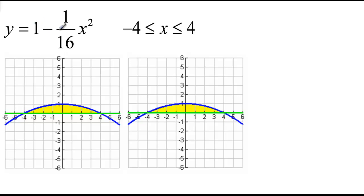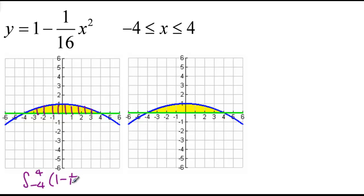Let's look at another example. Here we have 1 minus 1/16 x squared. If we want to do an integral in terms of x, everything looks great again. The top function is always the blue function, the bottom function is always the green function, and so we'd be integrating from negative 4 to 4 of 1 minus 1/16 x squared minus the bottom function, which is just 0 again, dx.